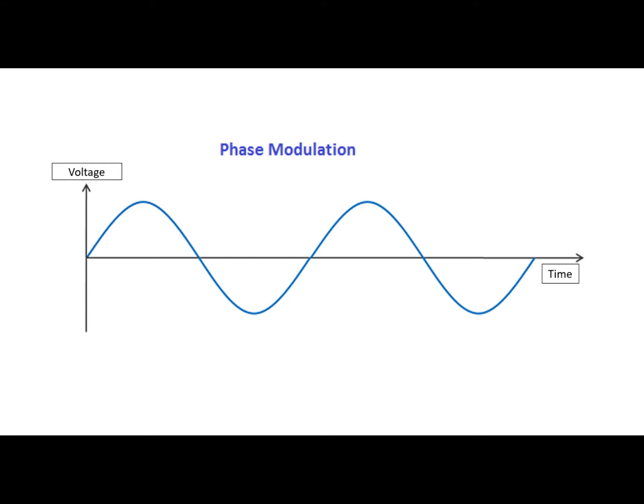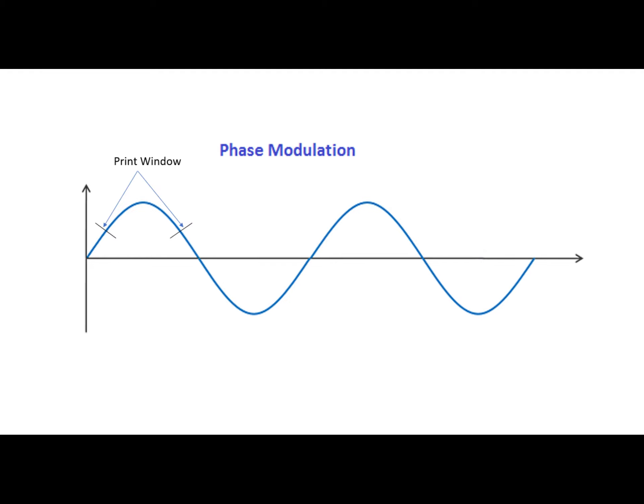So look at the diagram here. We've got voltage over time and we've got a sine wave. So what we're looking at is where our ideal print window is. And we could have a set point that is not in the middle, it's off to one end,